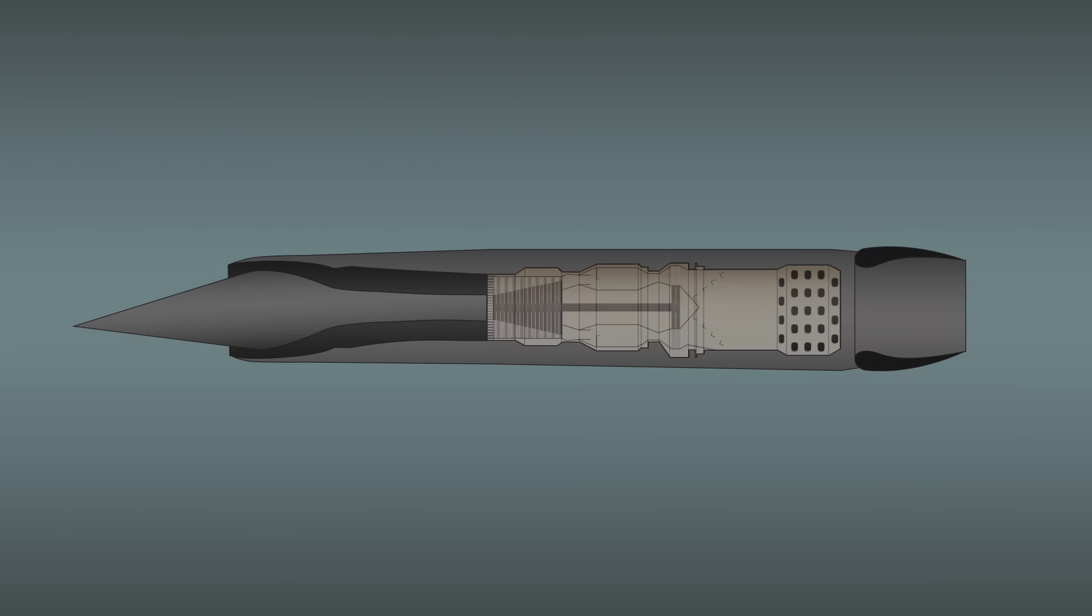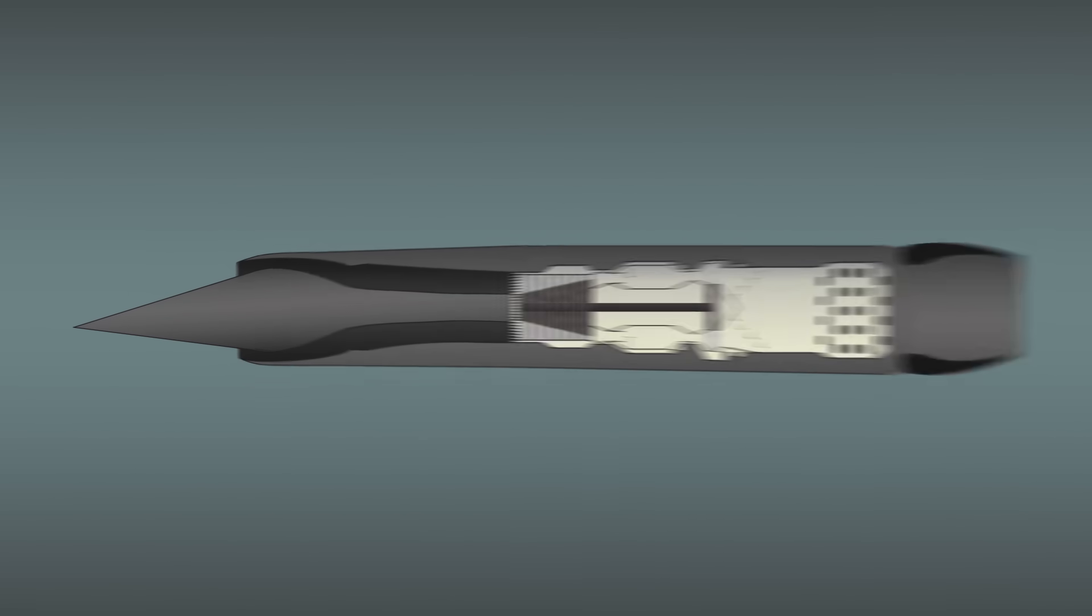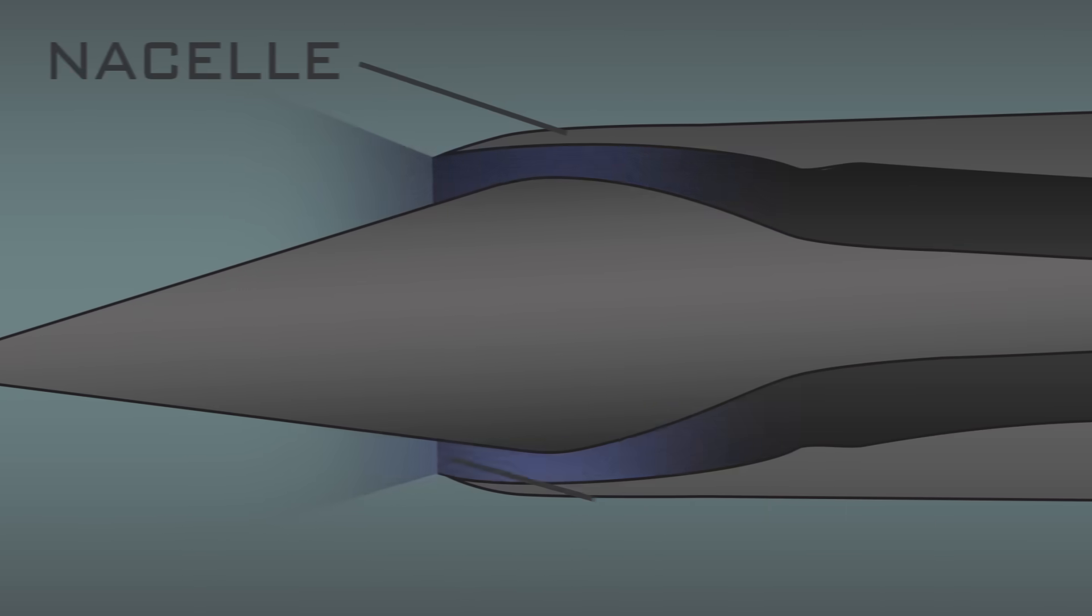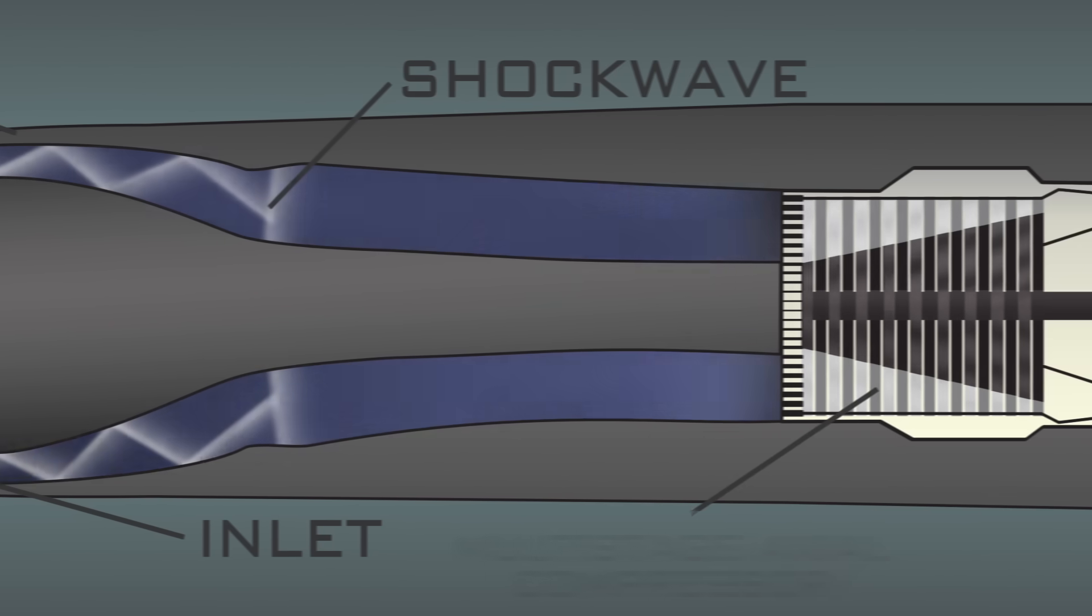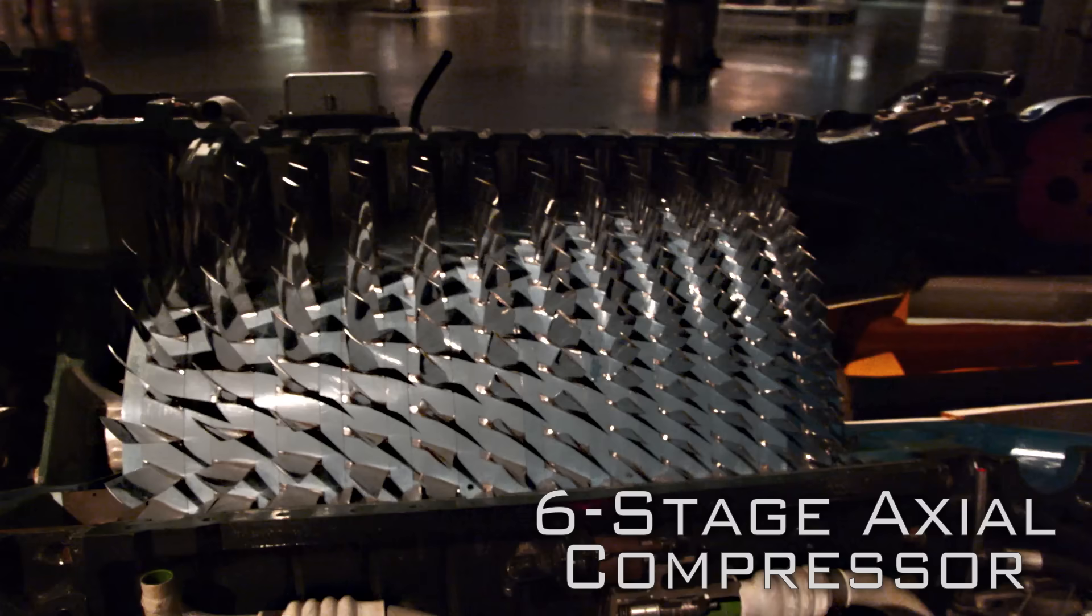At speeds below Mach 2, the J58 acts like any other afterburning turbojet engine. Air flows into the nacelle through the inlet, where it's allowed to diffuse behind the supersonic shockwave before moving into the multi-stage axial compressor, which looks like this, but bigger.